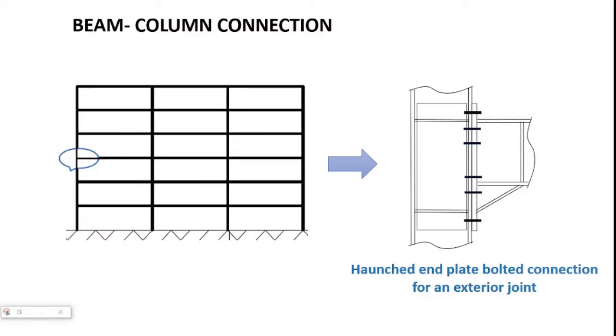The beam-column connection considered in this tutorial is shown here. It is essentially a haunched end plate bolted connection for an exterior joint.